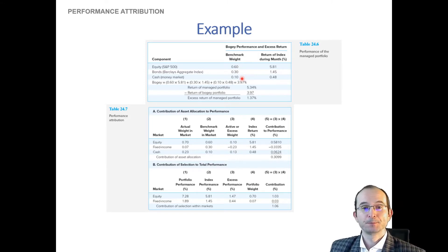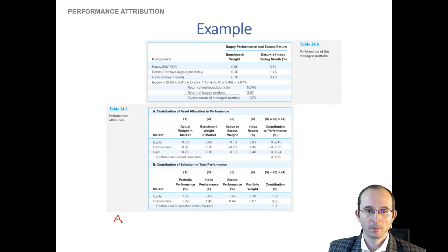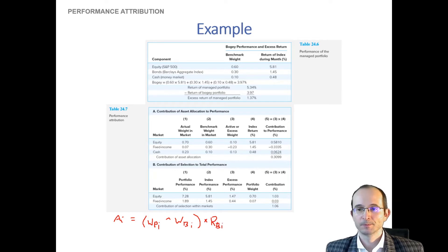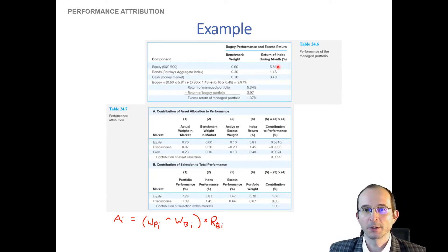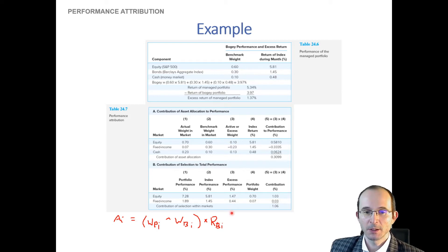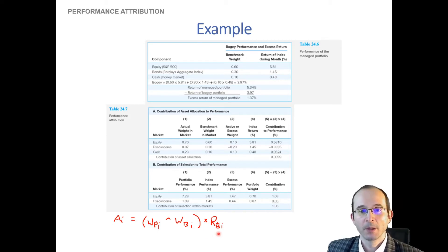Let's see if that paid off. The allocation effect for each asset class is the difference between the portfolio weight and benchmark weight for that asset class, times the benchmark return for that asset class. Here are our benchmark returns: we're looking at the S&P 500 as the equity benchmark, a fixed income index for fixed income, and a money market interest rate as the cash benchmark. Those returns are held constant — we're just looking at differences in weights.